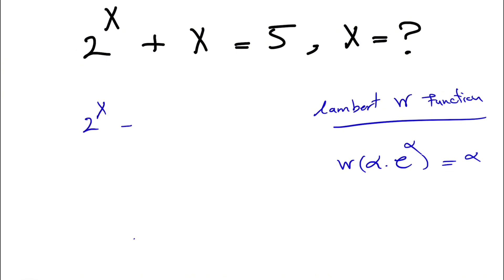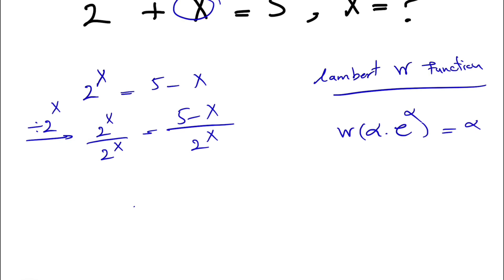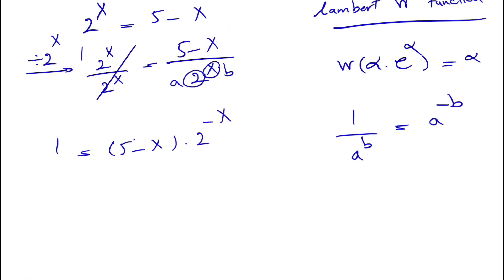We're going to keep 2 to the x on the left side of the equation and bring x to the other side, changing its sign from positive to negative x. In the next step we're going to divide each side of the equation by 2 to the x — knowing that 2 to the x cannot be 0 — so 2 to the x divided by 2 to the x equals 5 minus x divided by 2 to the x.